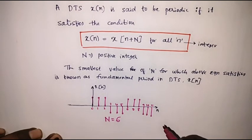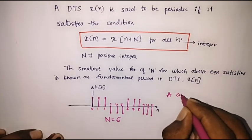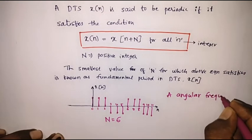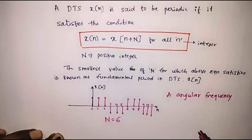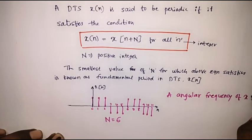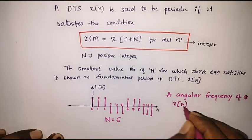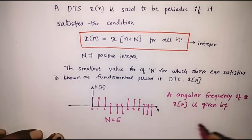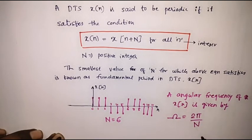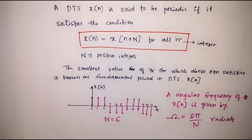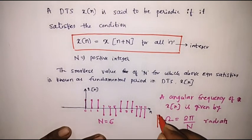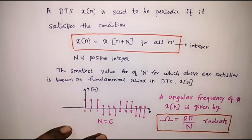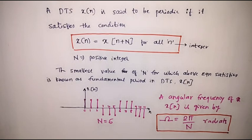Now let us see what the angular frequency is in the case of discrete-time signals. The angular frequency of x of n is given by omega equals 2π divided by N. This is the fundamental frequency equation in the case of discrete-time signals — that is, omega equals 2π by N radians. Thank you for watching.